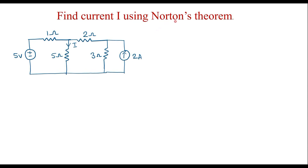Consider one example on Norton's theorem. Find current I using Norton's theorem. This is the given circuit. Here, I is the current through the 5 ohm resistor that we are supposed to calculate.